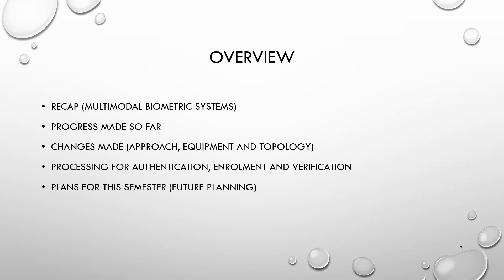The next heading, Processing for Authentication — Enrollment and Verification — provides a high-level description of how I plan on making this project work. The final topic, plans for this semester, includes a Gantt chart that describes the tasks and deadlines I need to meet in order to successfully develop this project.